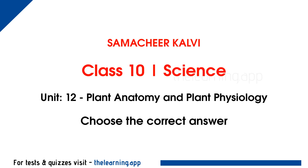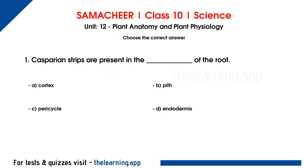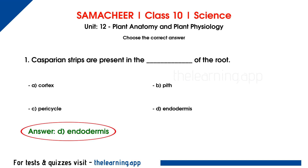Choose the correct answer. First question: Casparian strips are present in the dash of the root. Options are A, Cortex; B, Pit; C, Pericycle; D, Endodermis. The correct answer is Endodermis.